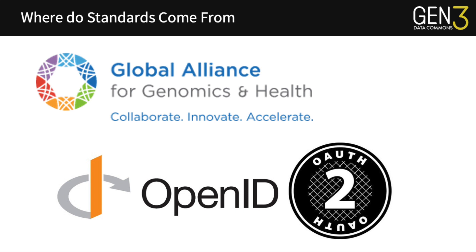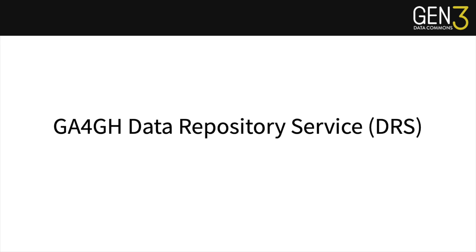By complying with these global standards in both genomics, as well as the general internet protocols, we are then able to interoperate across other systems, other APIs, and interoperate with other compute platforms working with genomic and scientific data. I'm going to talk a little bit about the GA4GH Data Repository Service, or DRS. This is most relevant to the framework services and very key because it relates to discovering data. The data repository service allows researchers to discover and access data in a consistent way, such that research can be reproducible.